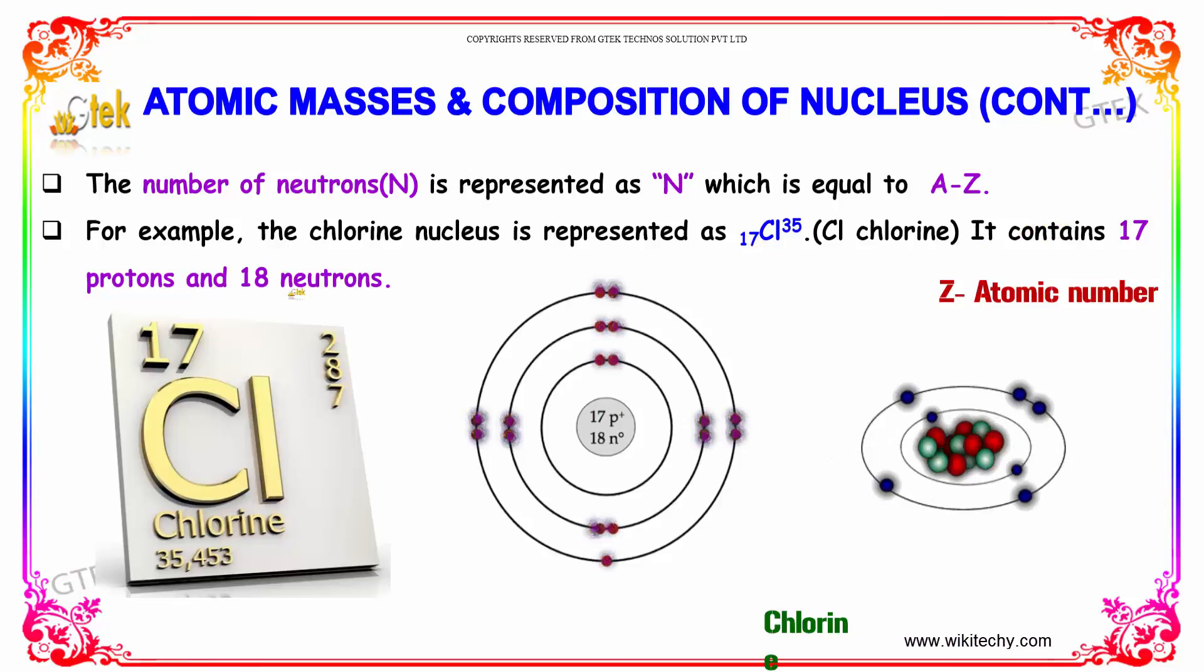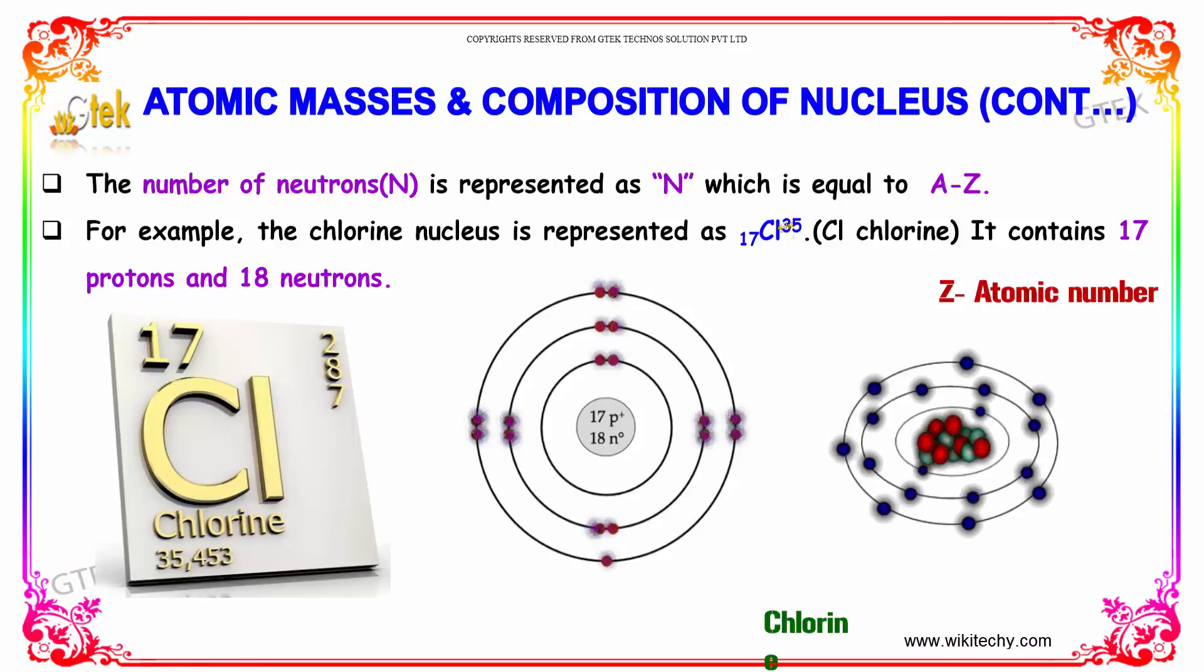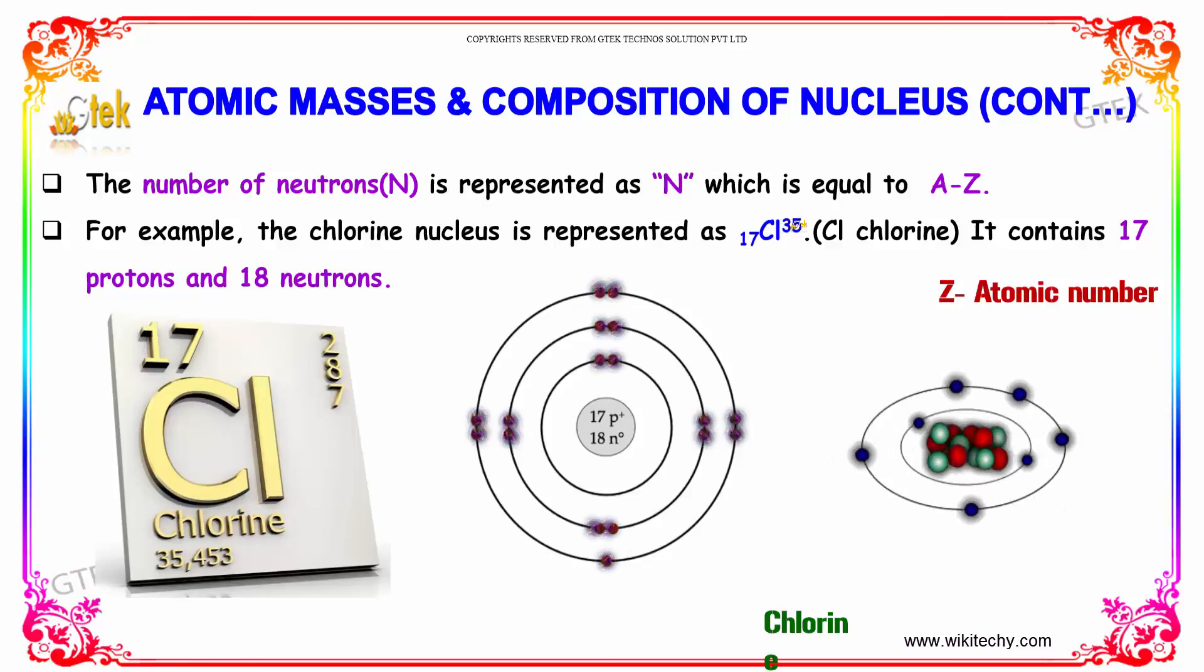It contains 17 protons and 18 neutrons, because 35 minus 17 equals 18 neutrons, and 18 plus 17 equals 35 total nucleons.